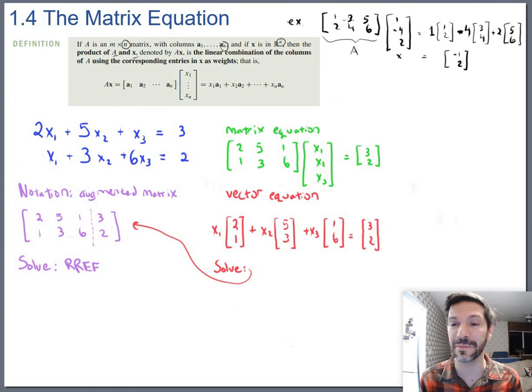So there's the first column: 1, 2, 3, 4, 5, 6—the three columns. And we're combining them with these weights. We're doing 1 of the first column, we're doing negative 4 of the second column, we're doing 2 of the third column.